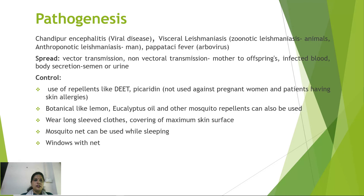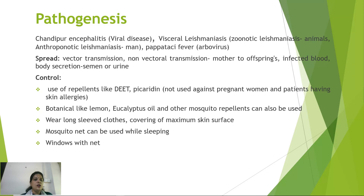Cold weather can extend the larval development period. The pupa is golden brown, immobile, and non-feeding; the last larval instar attaches to the substratum. Wings and eyes darken just before emergence. Males take a meal 24 hours before females to complete rotation of the external genitalia by about 180 degrees for mating. The life cycle completes in five to seven weeks. Pathogenesis includes Chandipura encephalitis, visceral leishmaniasis (zoonotic or anthroponotic), and papatasi fever. Control involves repellents like DEET, botanicals like lemon and eucalyptus oil, long-sleeved clothing, and mosquito nets.